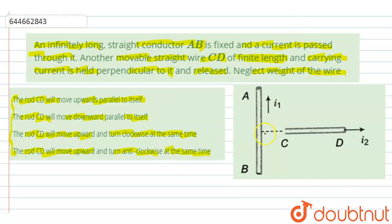So we are having two conductors: AB is the infinitely long conductor and CD is of finite length. Let's say the length of CD is small l, and it is placed at a distance X from the infinitely long conductor AB.